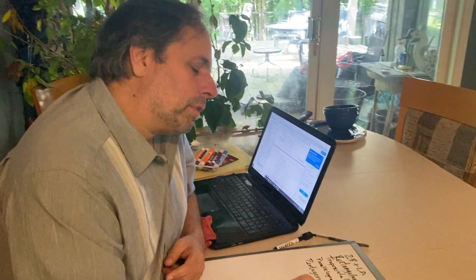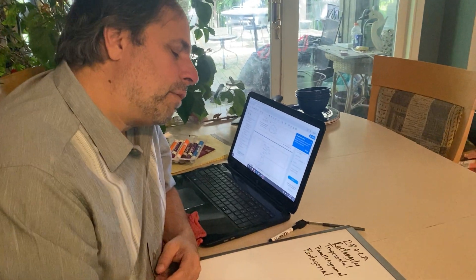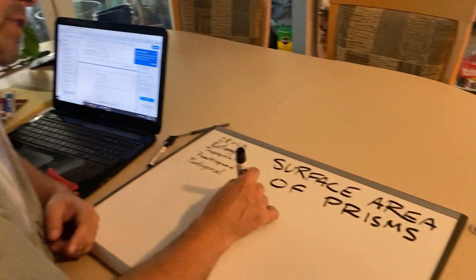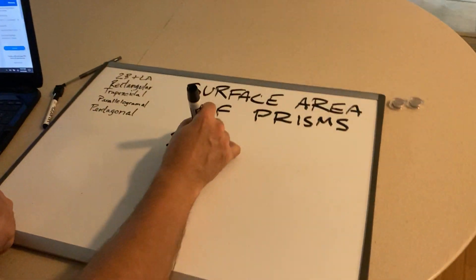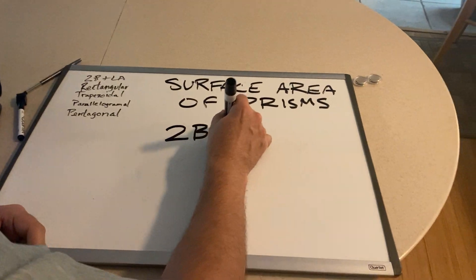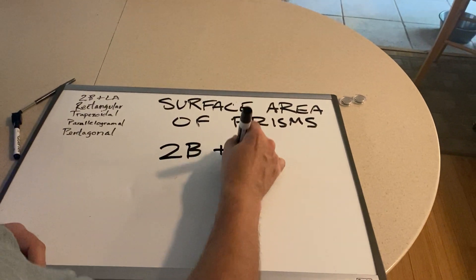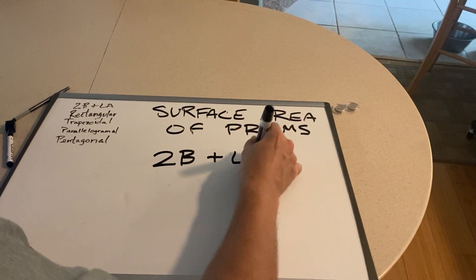Hello everyone again. We're going to talk about the surface area of prisms again. If you remember last time we talked, we were talking about triangular prisms, and we said that the surface area was two times the base plus the lateral area.